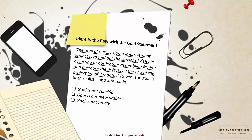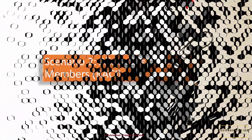If you could form a goal statement which said something like decreasing the defect by 50%, we could say it's measurable. Now let's see if it's timely enough. Yes — we are bounded to make improvements by a certain time, that is by the end of the project life of four months, so it's timely. As there is no information in this statement about decreasing the defect by certain units, the goal is not measurable. So this is the flaw with this goal statement.